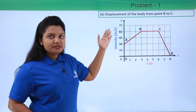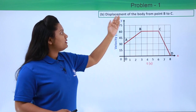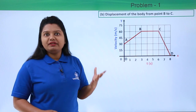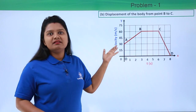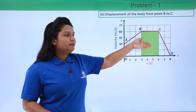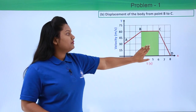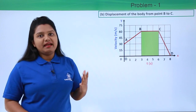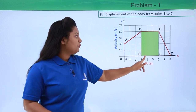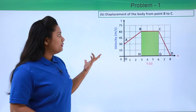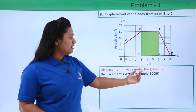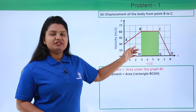Now let's solve the second part: find the displacement of the body from point B to point C. As before, we find the area under the graph, this time under segment BC. Let point H be this point and point G be this point. The displacement from B to C equals the area of rectangle BCGH, shown shaded in green.